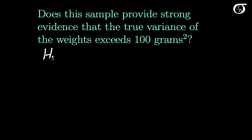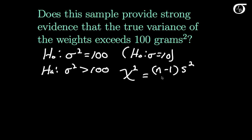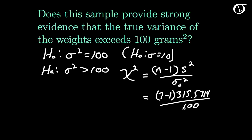We test the null hypothesis that the true variance equals 100 — equivalently, that the standard deviation equals 10 — against the alternative hypothesis that the variance is actually greater than 100. We now calculate our chi-square test statistic: (n-1) times S squared over sigma-naught squared. That works out to (7-1) times 315.5714 divided by 100, which equals 18.934 to three decimal places.